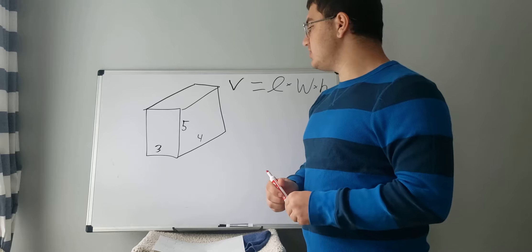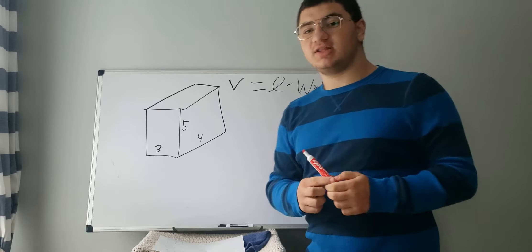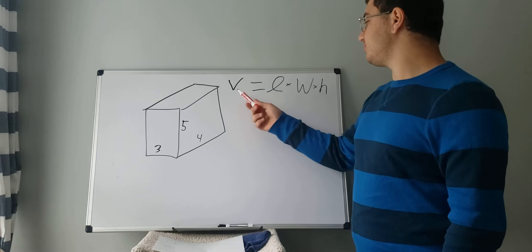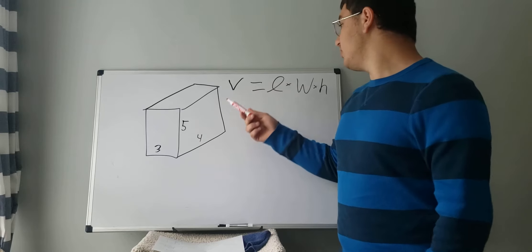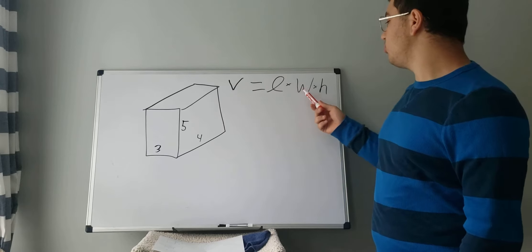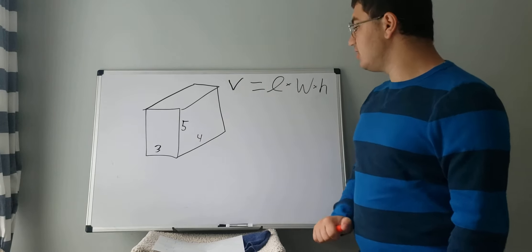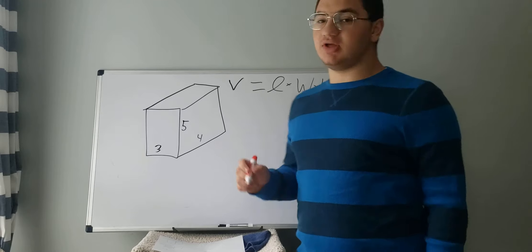We're going to find the volume of this rectangular prism and you can find that by using this formula. Volume equals the length times the width multiplied by the height and then that will give you your answer.